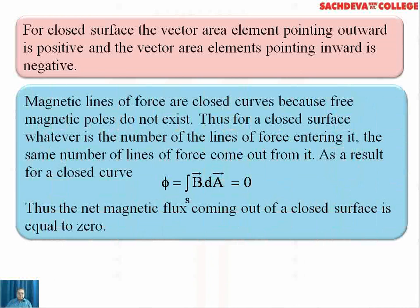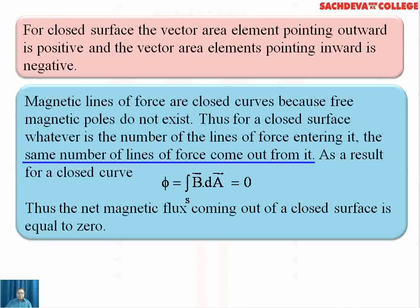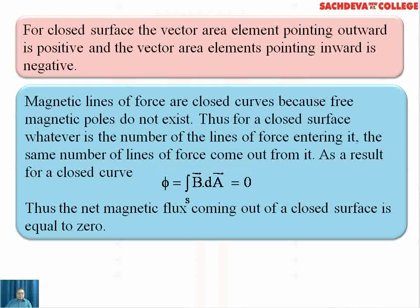Magnetic lines of force: a magnetic line of force is a path traced by a unit north pole within a magnetic field, but isolated magnetic poles do not exist. So magnetic lines of force are closed curves because free magnetic poles do not exist. Therefore, for a closed surface, whatever is the number of lines of force entering it, the same number comes out from it. As a result, for a closed surface, the surface integral of B·dA equals 0. Thus, the net magnetic flux coming out of a closed surface is equal to 0.